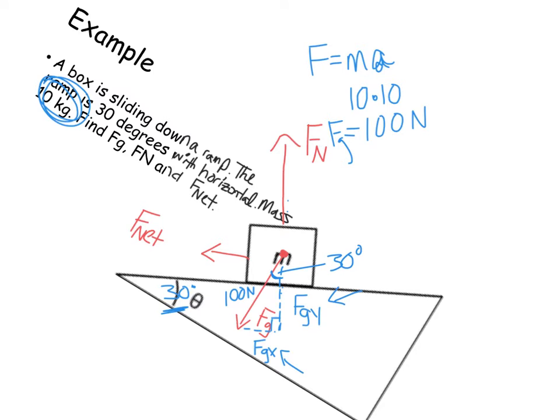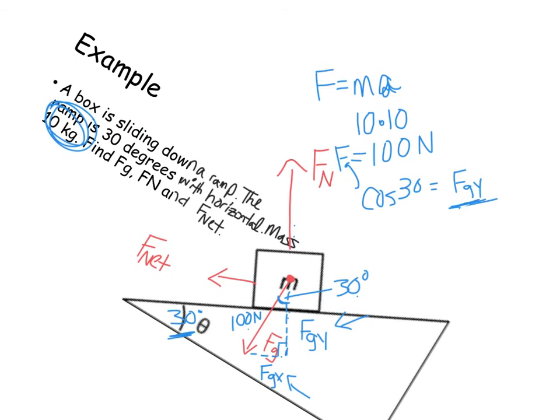All right, so let's go find F of G Y. So I have this angle and I have that, so that's going to be cosine of 30 degrees is equal to my adjacent, which is my F G Y over my hypotenuse. All right, do a little bit of fancy math, and we get our F G Y, which is opposite, equal in magnitude to our force normal. Okay, so that's 86.6 Newtons.